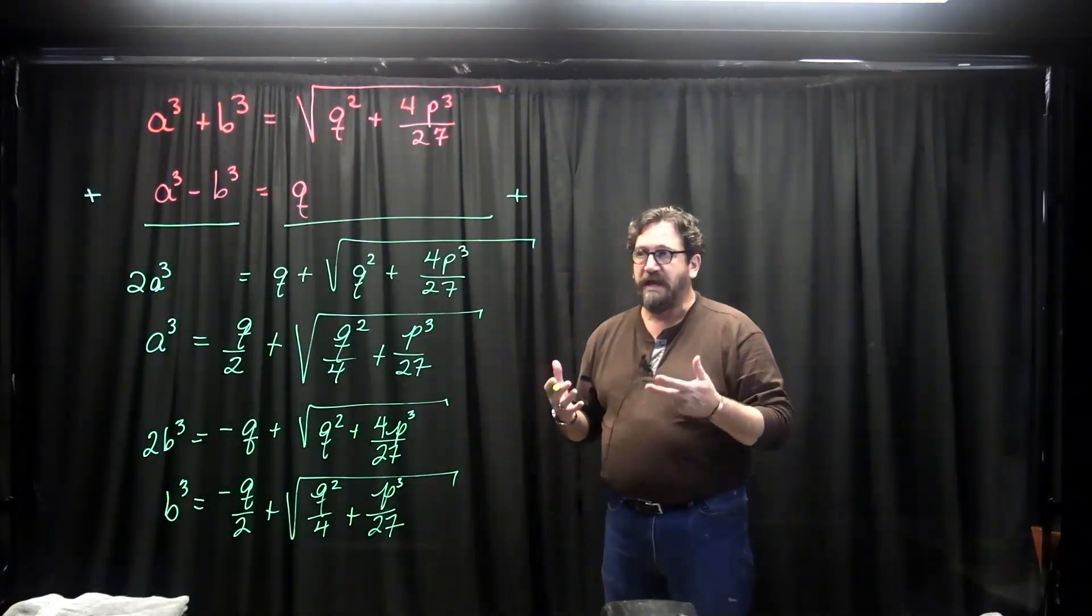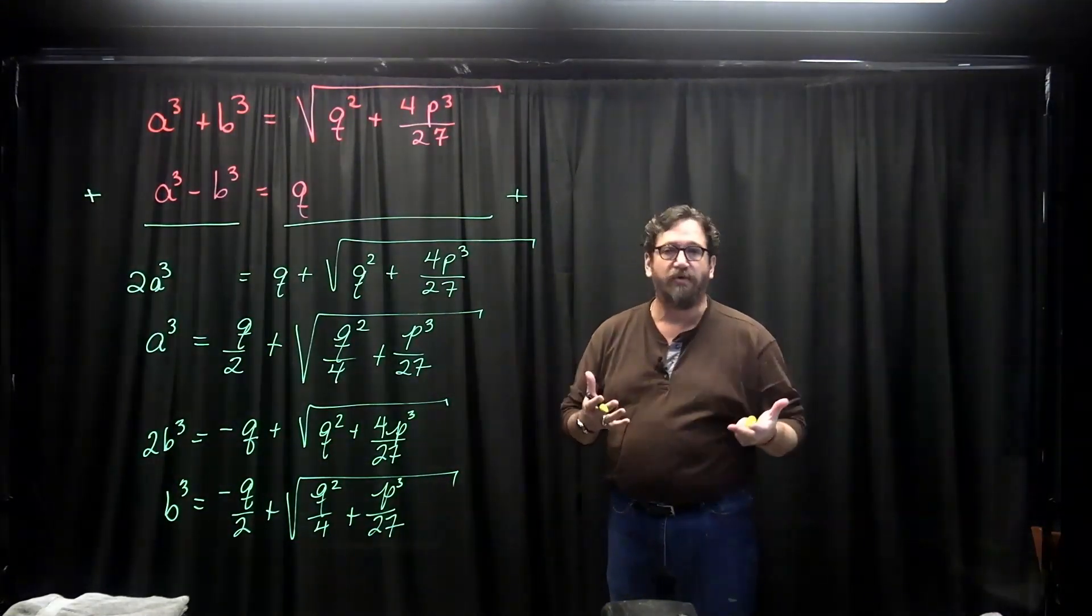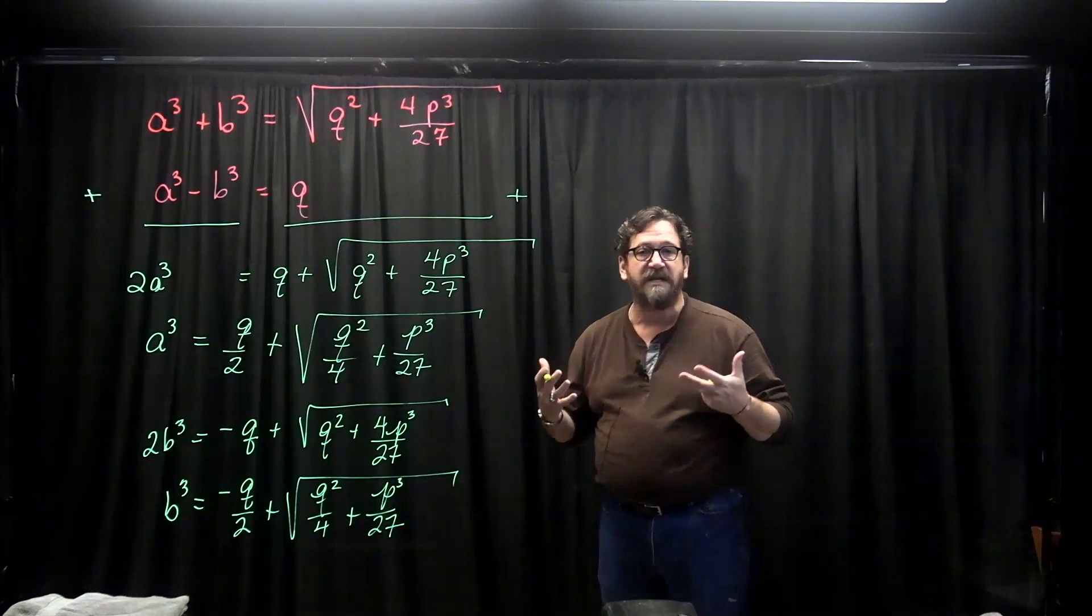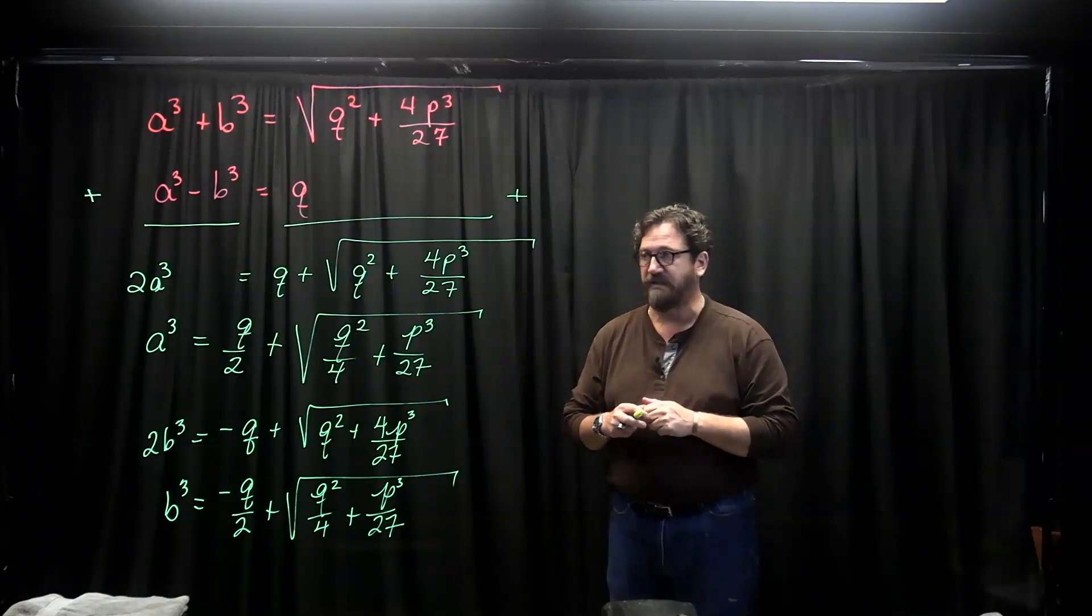Now, knowing a cubed and b cubed, I can now basically take the cube roots of these things, because they're going to be numbers, and we know how to find the cube root of a number. The Greeks could do this for us.